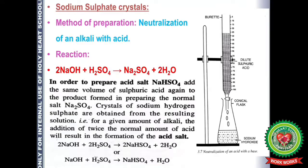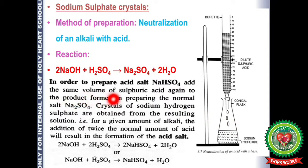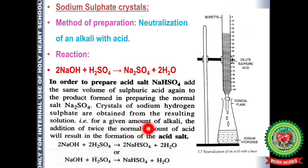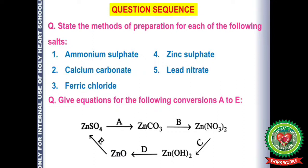To prepare sodium hydrogen sulfate (NaHSO₄) from sodium sulfate: add the same volume of sulfuric acid again to the Na₂SO₄ product. In the normal salt preparation, 2 NaOH react with 1 H₂SO₄. For NaHSO₄, use 2 NaOH with 2 H₂SO₄. In this way, sodium hydrogen sulfate can also be prepared.